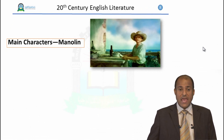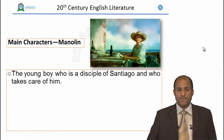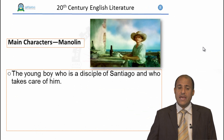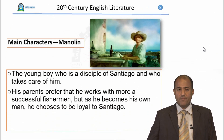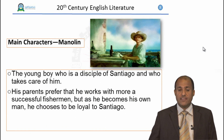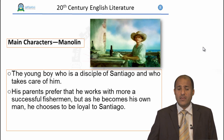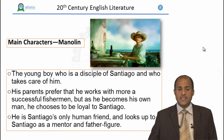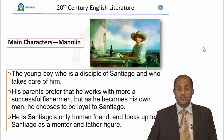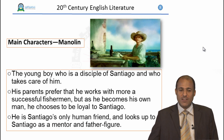The second main character is Manolin, the boy. He is a young boy who is a disciple of Santiago and he takes care of him. His parents prefer that he works with more successful fishermen, but as he becomes his own man he chooses to be loyal to Santiago. He is Santiago's only human friend and he looks up to Santiago as a mentor and father figure — he is a trainee and his trainer is Santiago.